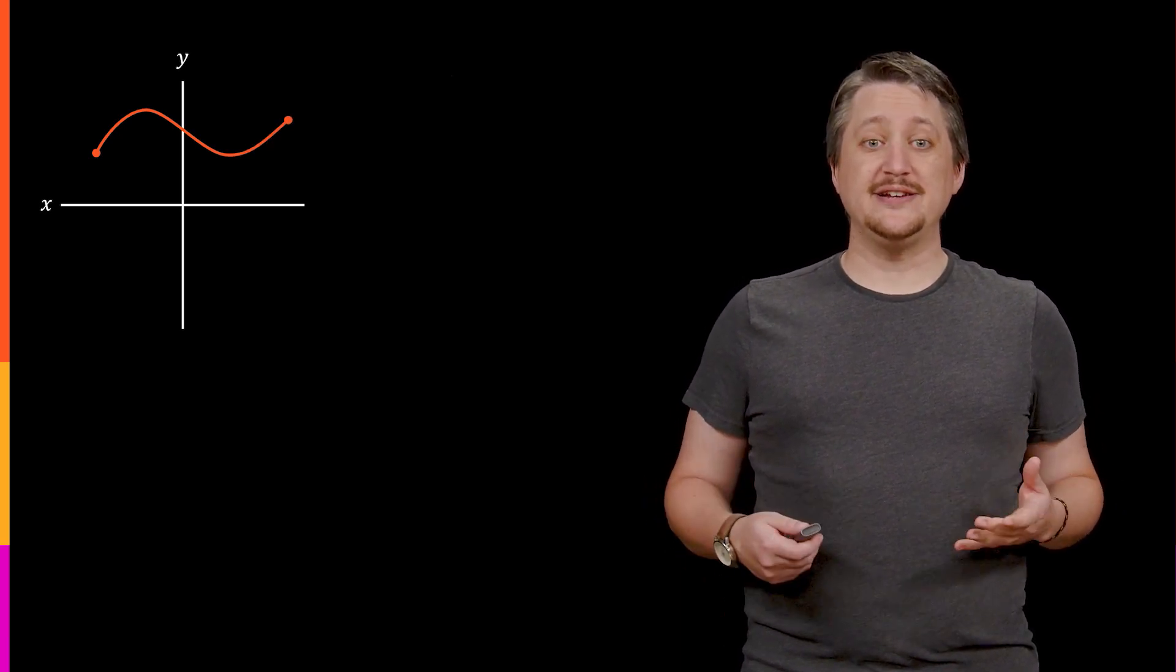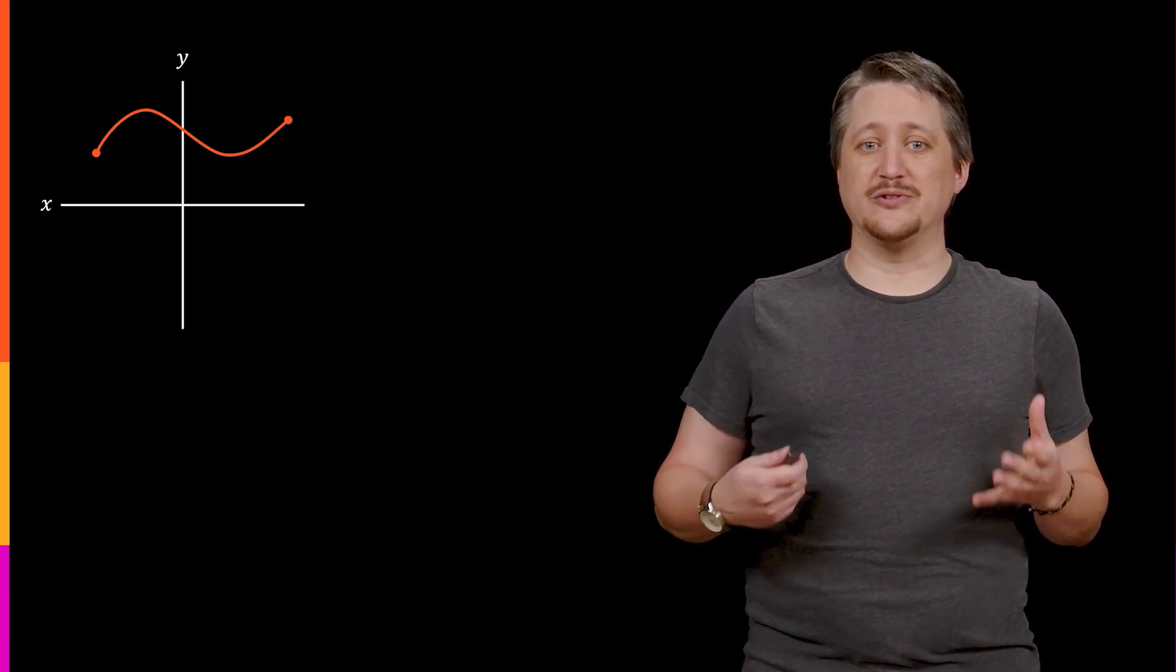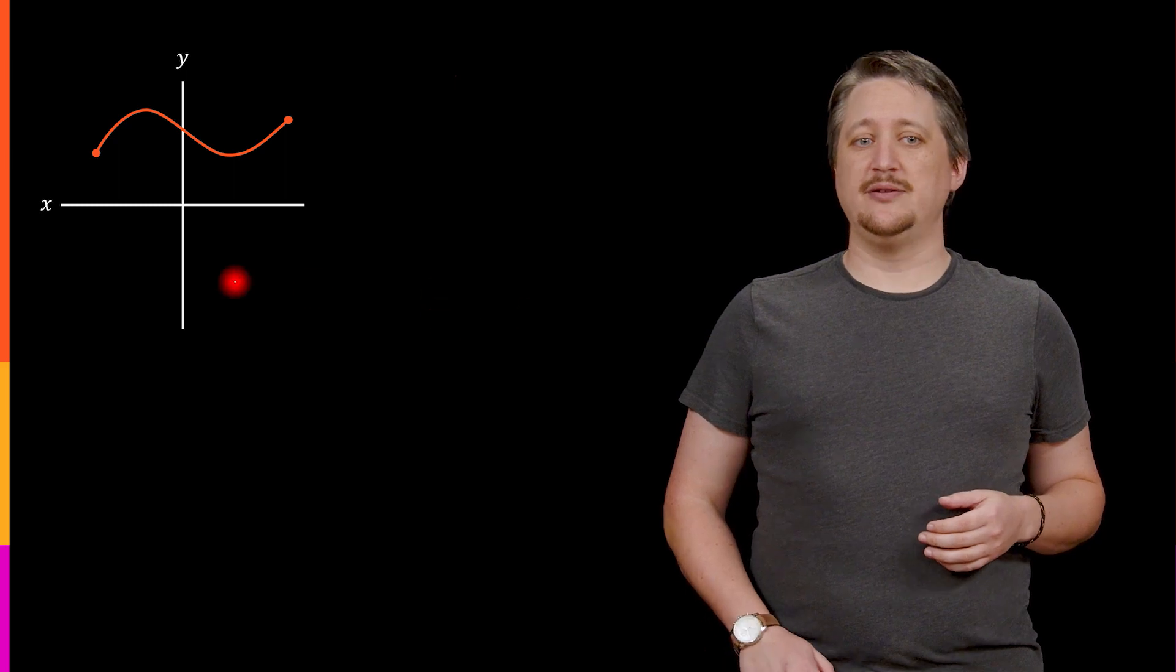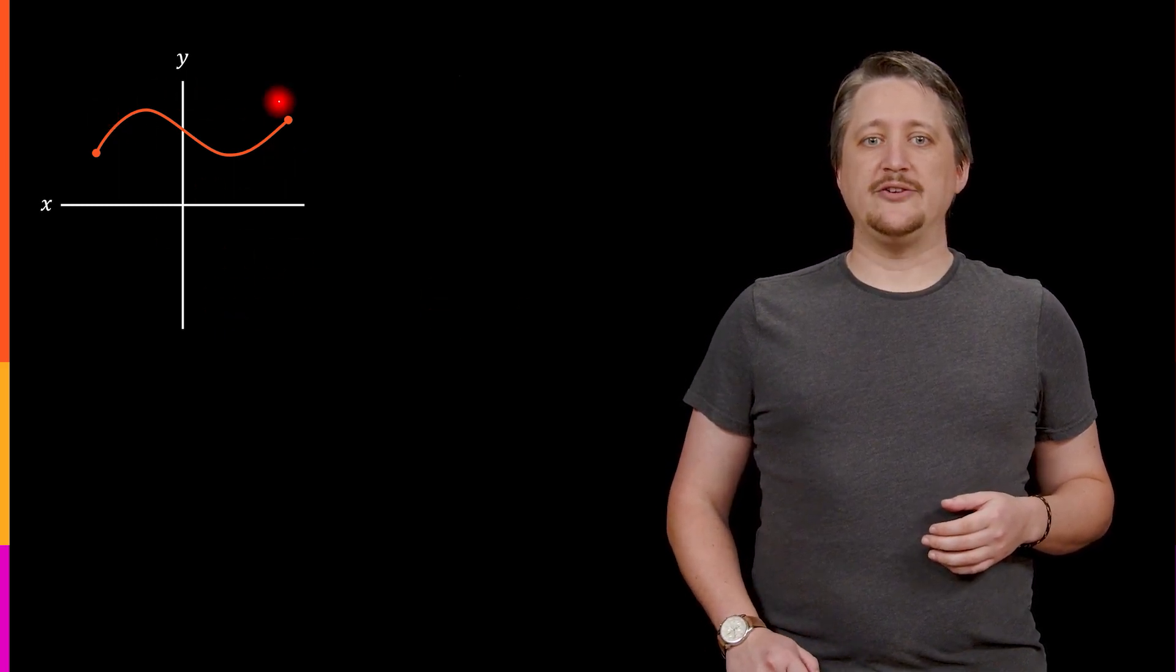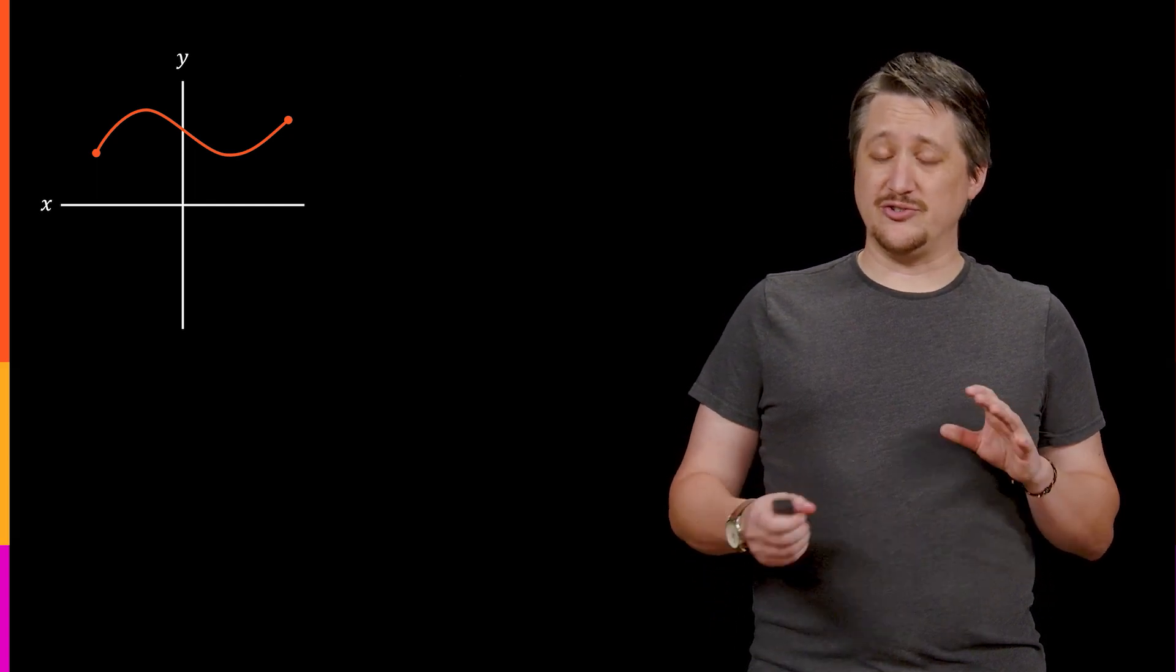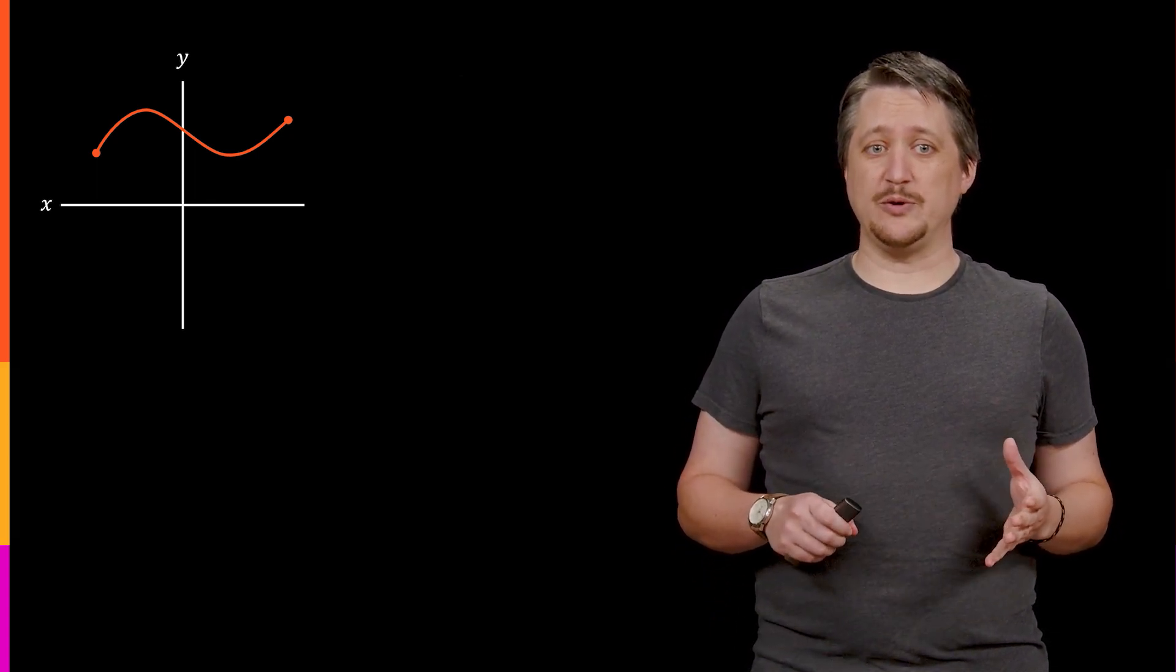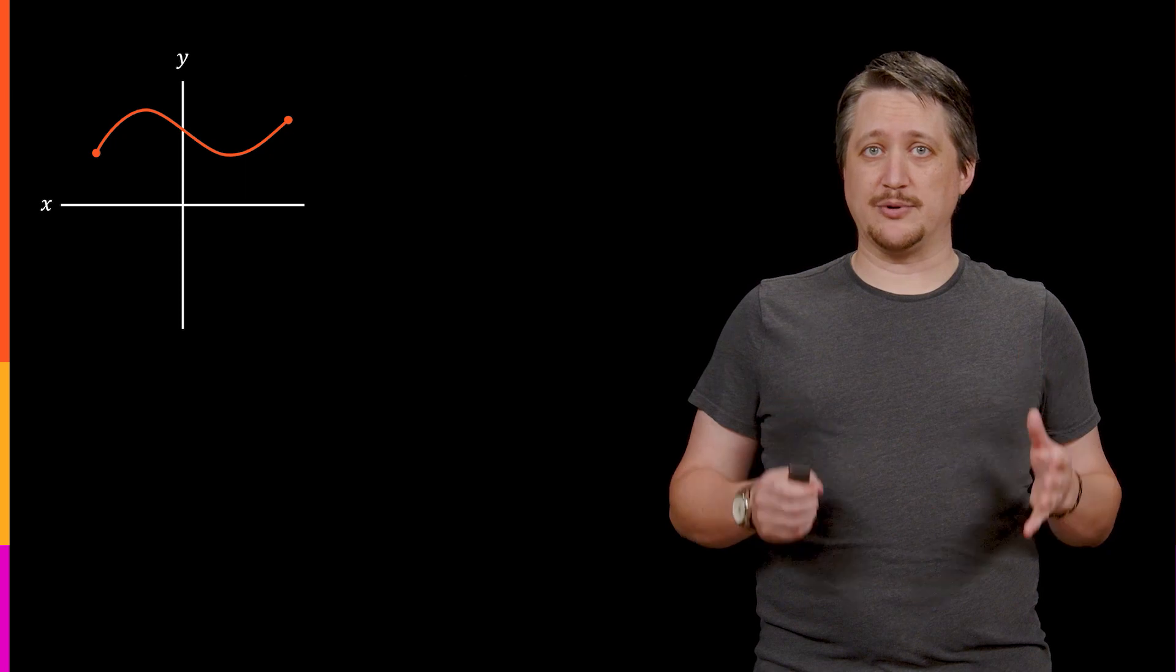So let's start with a curve. The idea is we have some xy axis just like normal, we have this curve here, and to be a translation, just a regular translation, what that would mean is that we want to move this thing left, right, up, or down.